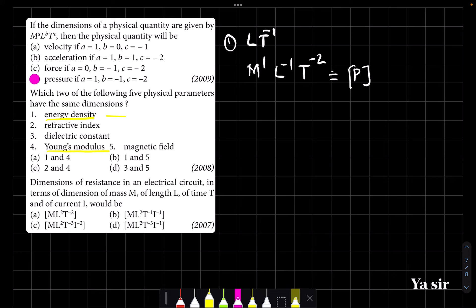Alright, so 1 and 4, option A is the correct answer. One more thing: refractive index does not have any dimension, dielectric constant, which is relative permittivity, does not have any dimension, that is also okay. But 2 and 3 is not in the option. They are dimensionless, and 2 and 3 not in the option. Okay, last one.